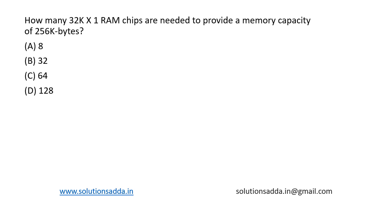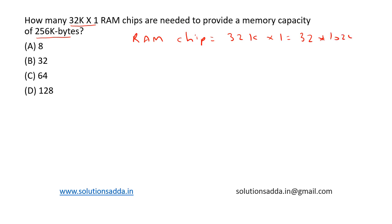This is a question from digital logic design: how many 32K×1 RAM chips are needed to provide a memory capacity of 256 kilobytes? The RAM chip capacity is equal to 32K×1, which is equal to 32 into 1024 into 1 bits.